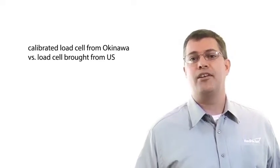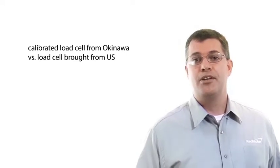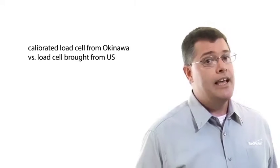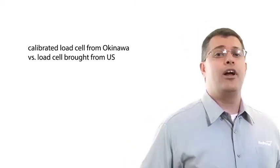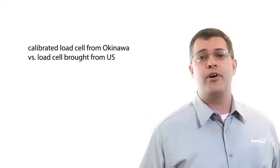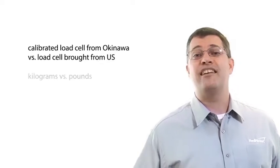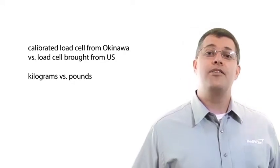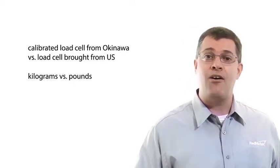The investigation immediately turned to the calibrated load cell from the Okinawa base that was used instead of the load cell that was originally brought from the United States. It didn't take the team long to determine that the calibrated load cell they used from the Okinawa rigging shop was calibrated in kilograms, where the load cell and the test plan required the use of a load cell calibrated in pounds.